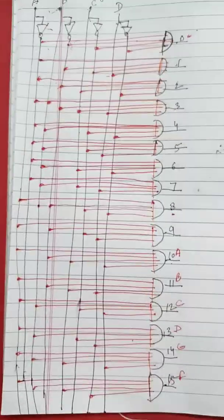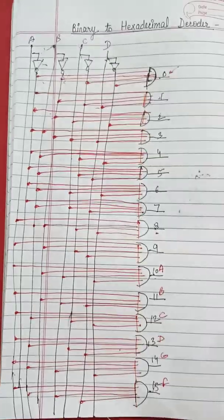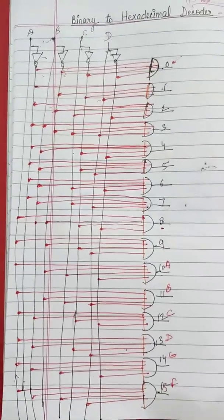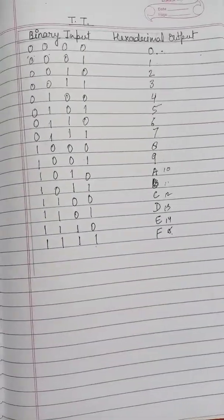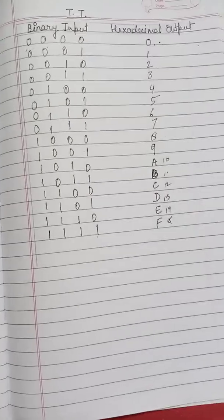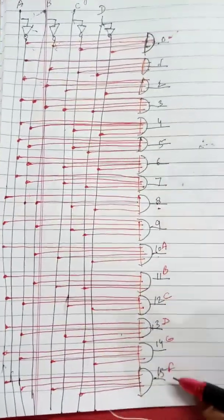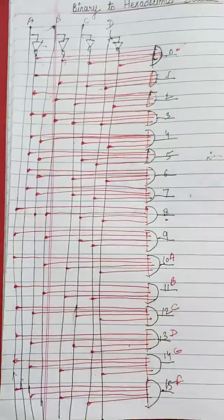So this is the diagram of binary to hexadecimal decoder. You can make it easily with the help of a truth table, or without a truth table you can also make this if you know the binary equivalent of these hexadecimal numbers.